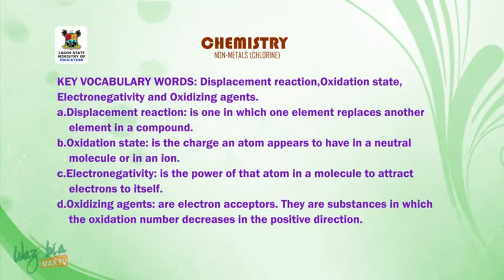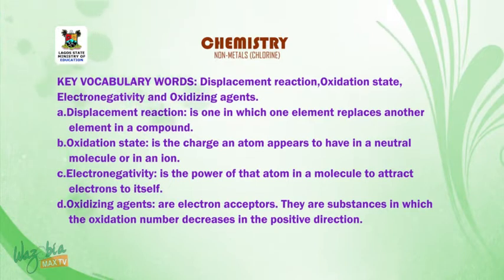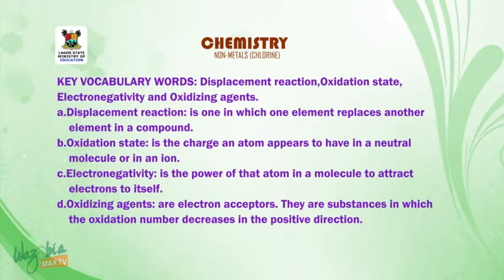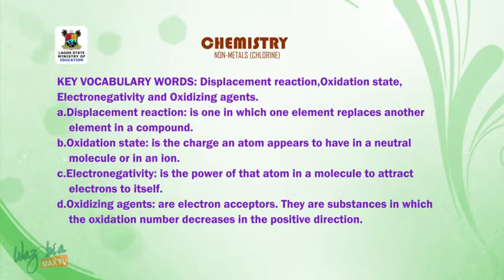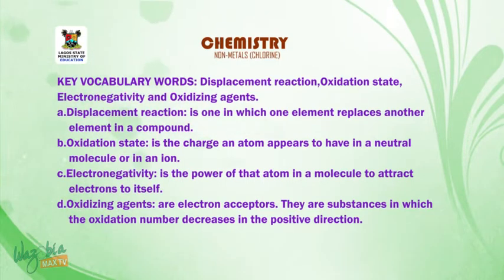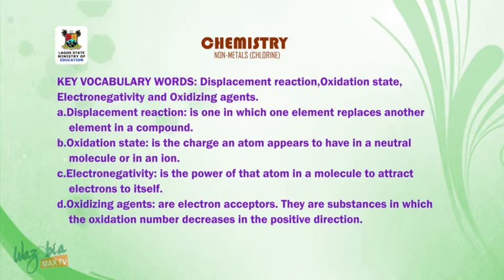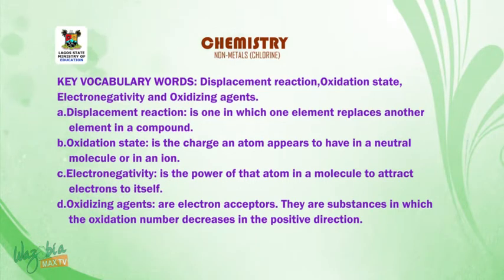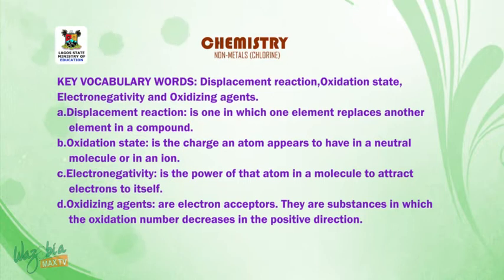Key vocabulary words are: A. Displacement reaction — a reaction in which one element replaces another element in a compound. B. Oxidation state — the charge an atom appears to have in a neutral molecule or in an ion. C. Electronegativity — the power of an atom in a molecule to attract electrons to itself. D. Oxidizing agents — they are electron acceptors; substances in which the oxidation number decreases in the positive direction.